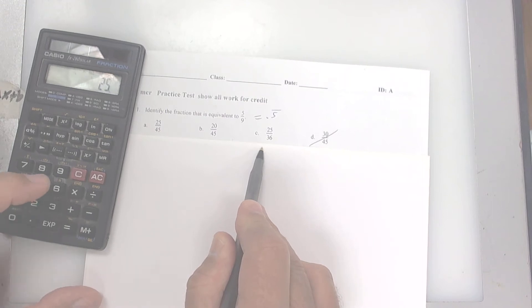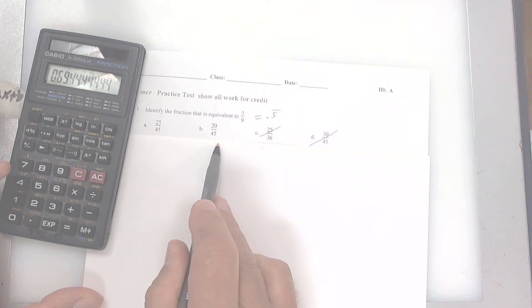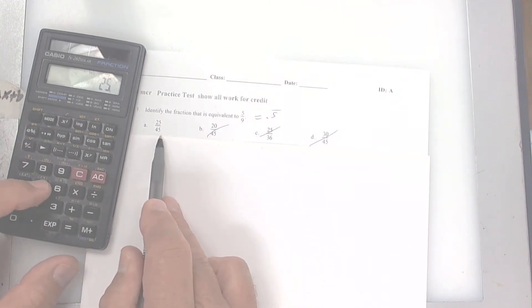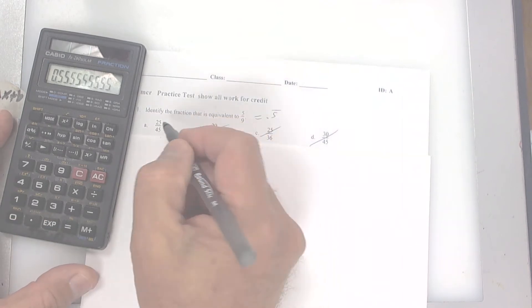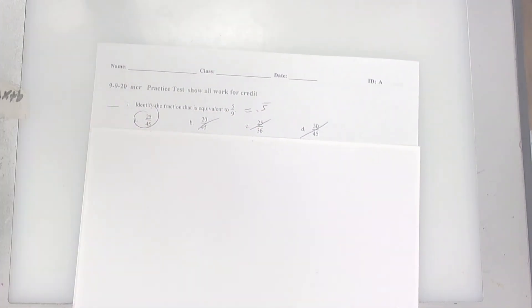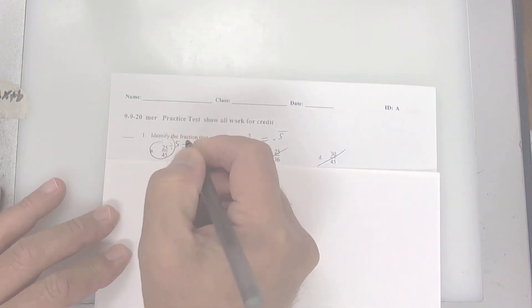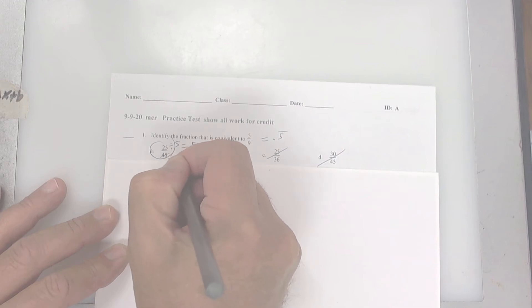I'm going to go 30 divided by 45. That's 0.6 repeating, so we know it's not that. 25 divided by 36, nope, not that one. 20 divided by 45, not that one. It's got to be this one. So 25 divided by 45. And there it is. So if you reduce this, you divide by 5. 25 divided by 5 is 5 and 45 divided by 5 is 9. And there it is.